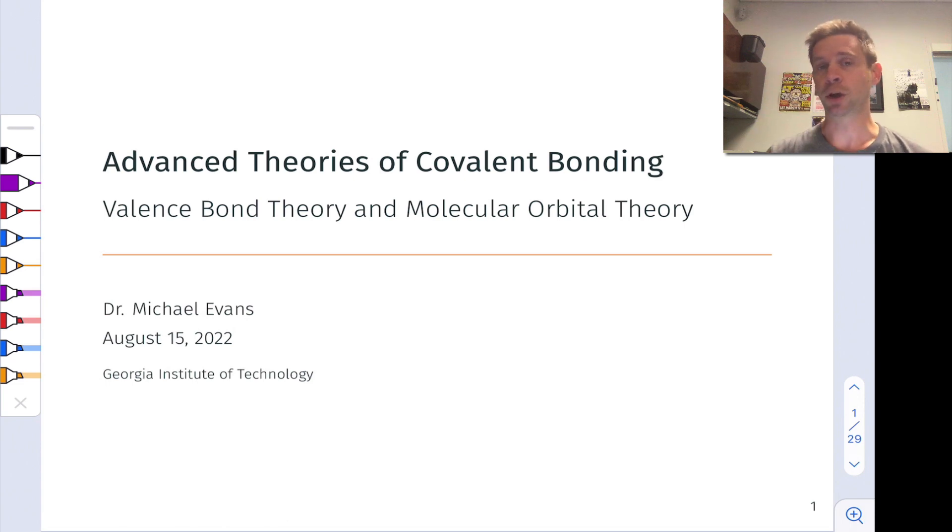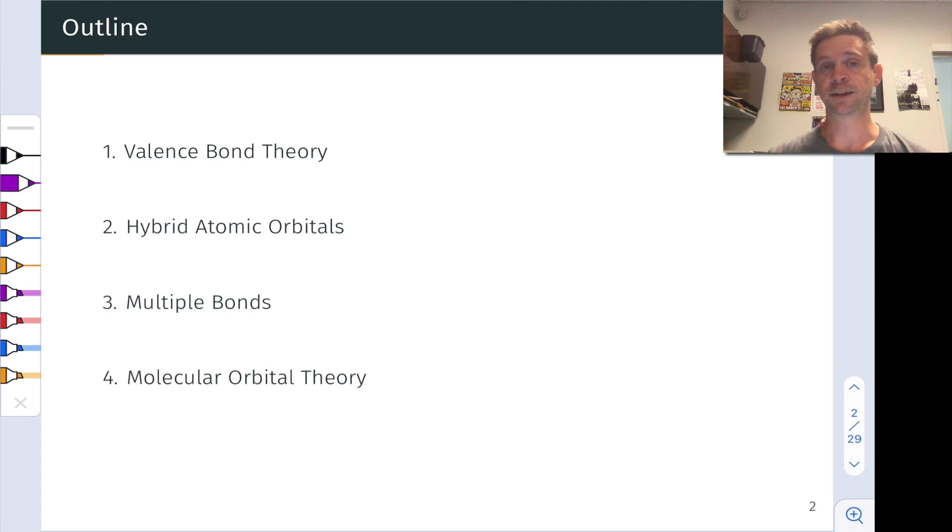So the title of this chapter in the OpenStacks text is Advanced Theories of Covalent Bonding. Valence Bond Theory and Molecular Orbital Theory are going to be our focus in this series of videos. So we're going to begin in section one with a general overview of valence bond theory. And even before we get there, we're going to talk about what a bonding theory is in general and what we're trying to do with bonding theories as a matter of theoretical usefulness.